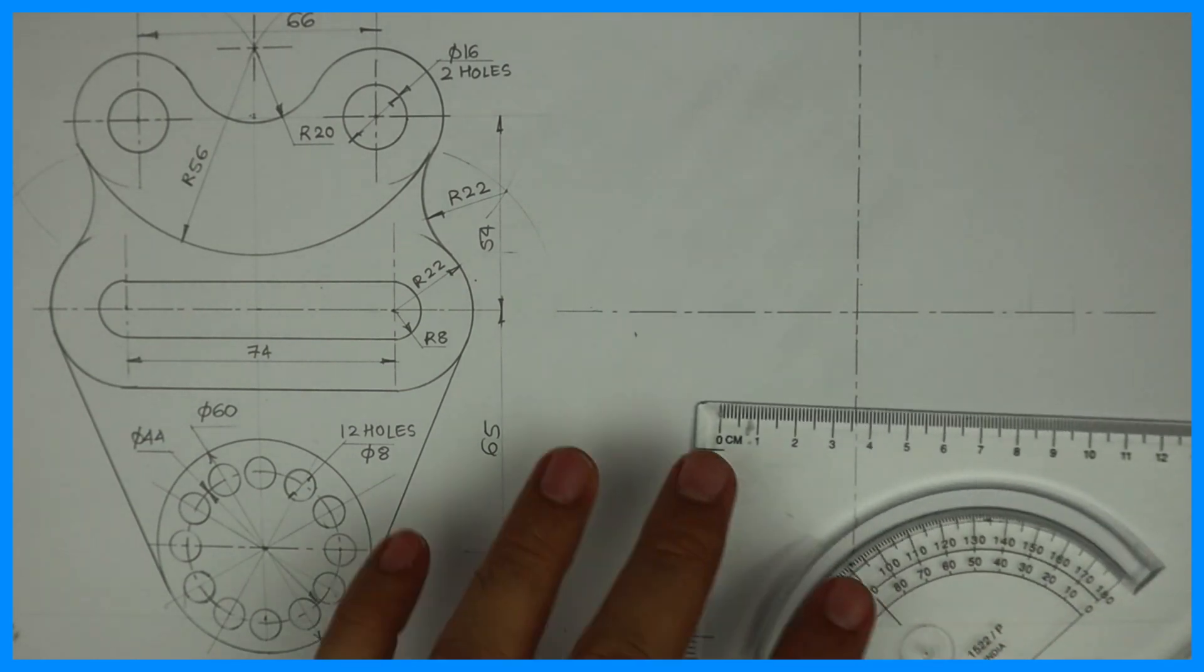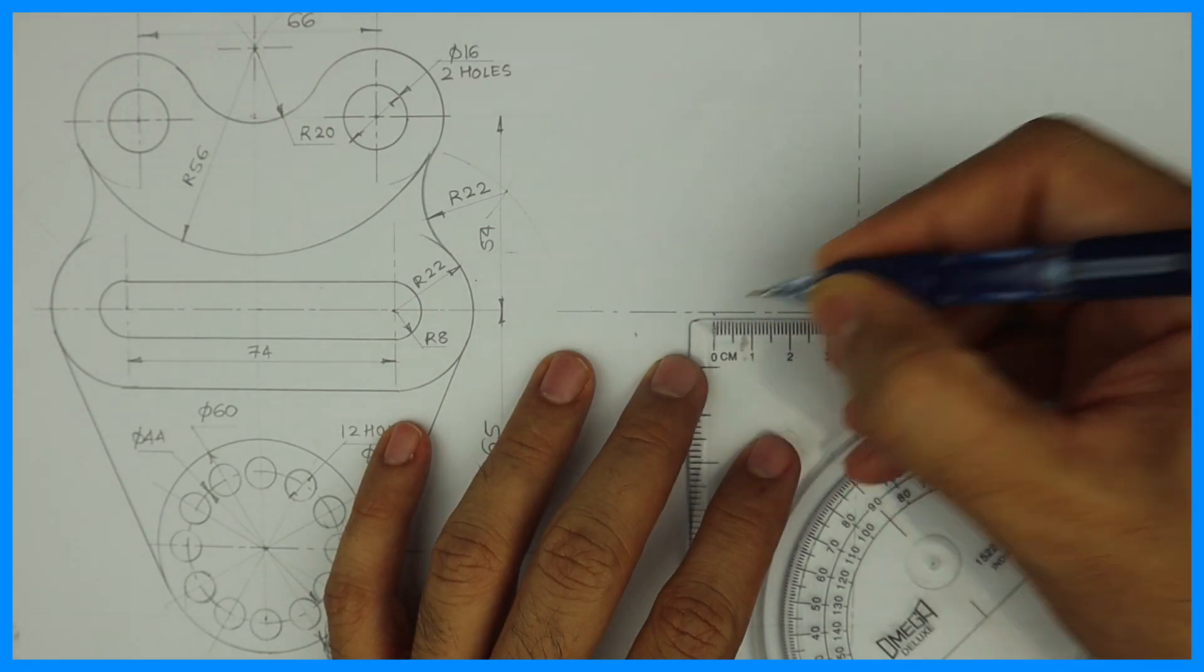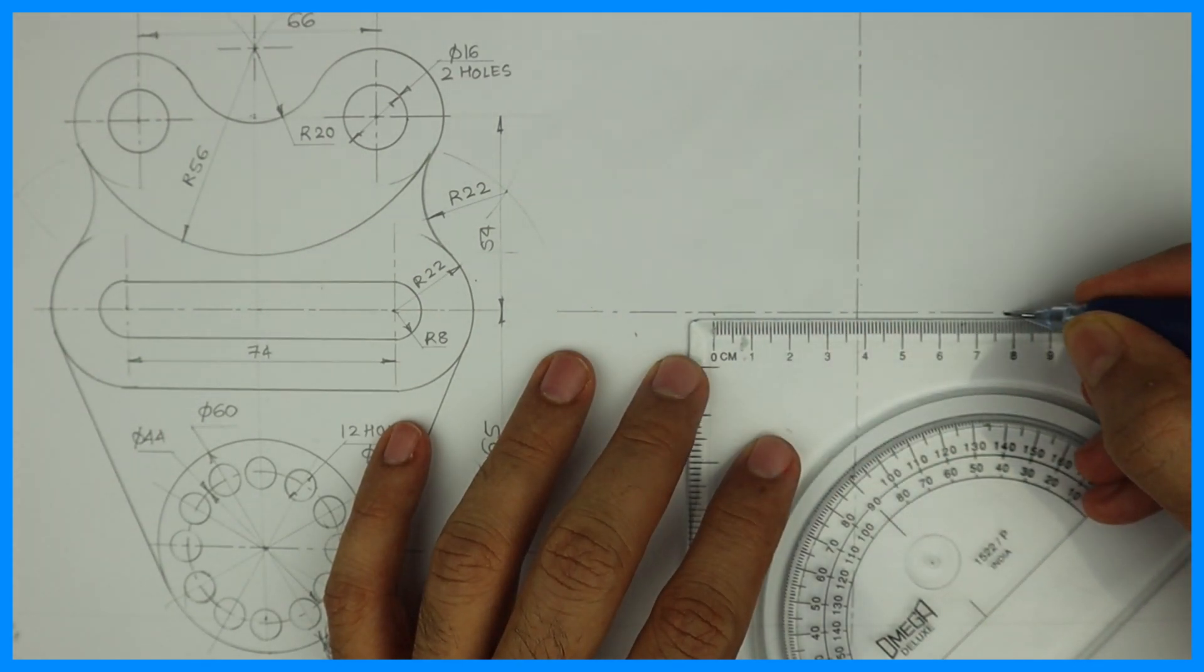Then they have given 74, so I will take 37 and 37 on both sides and I will draw the axis line.